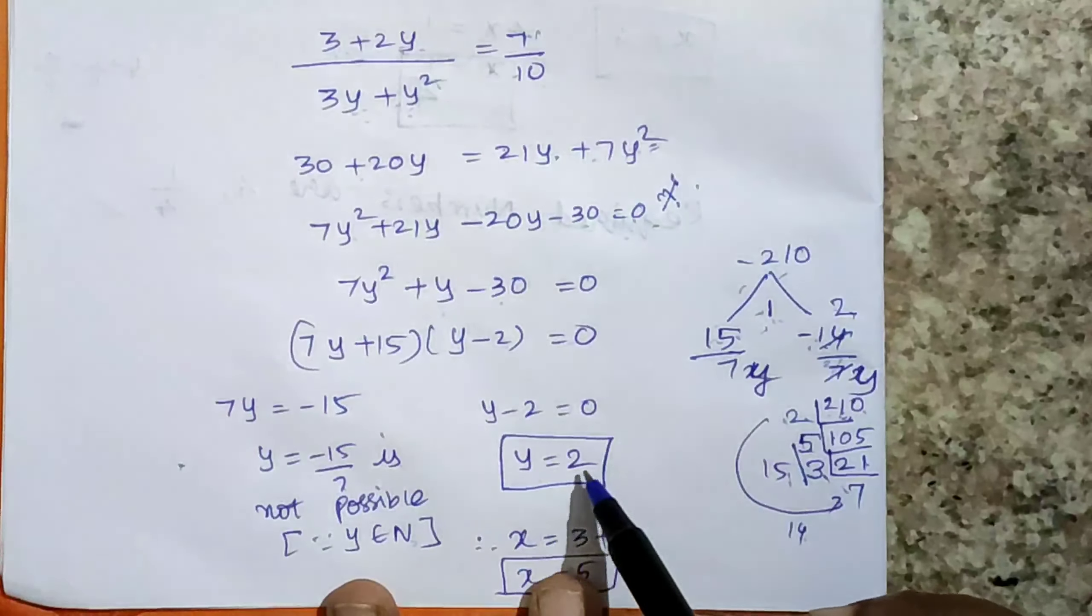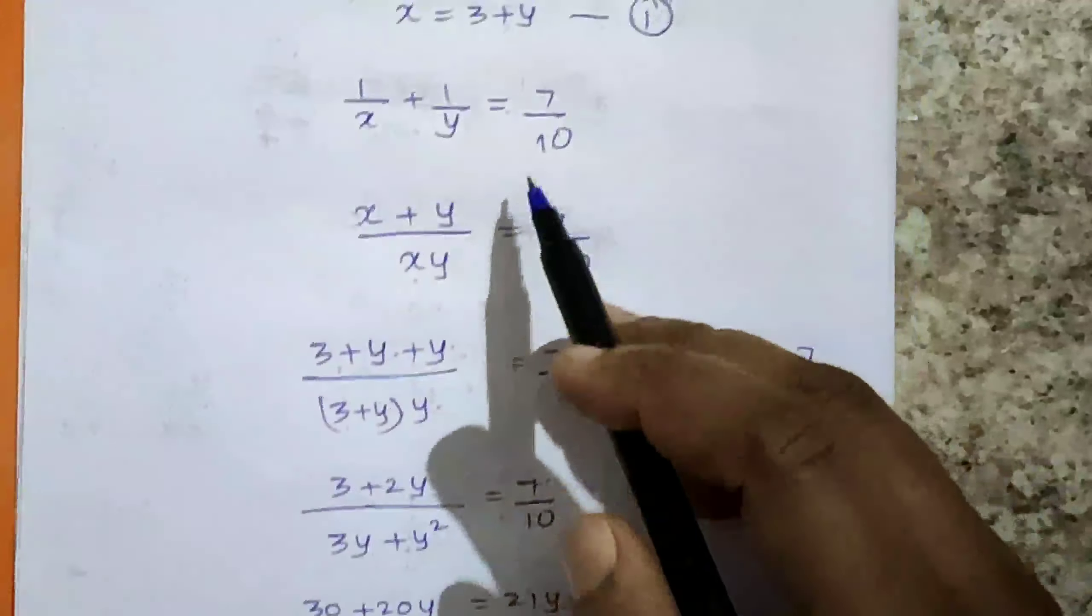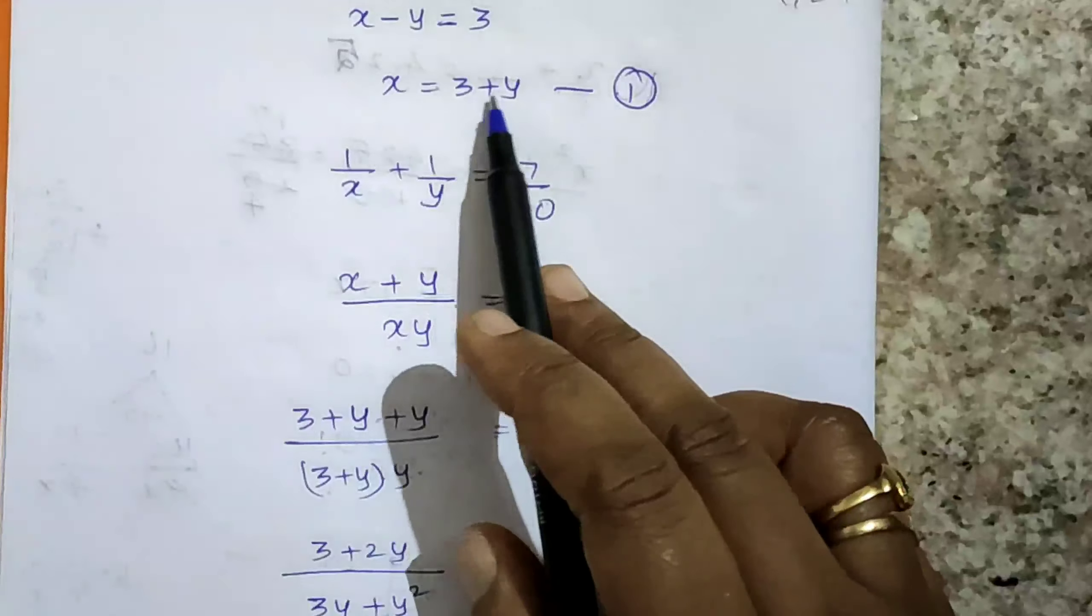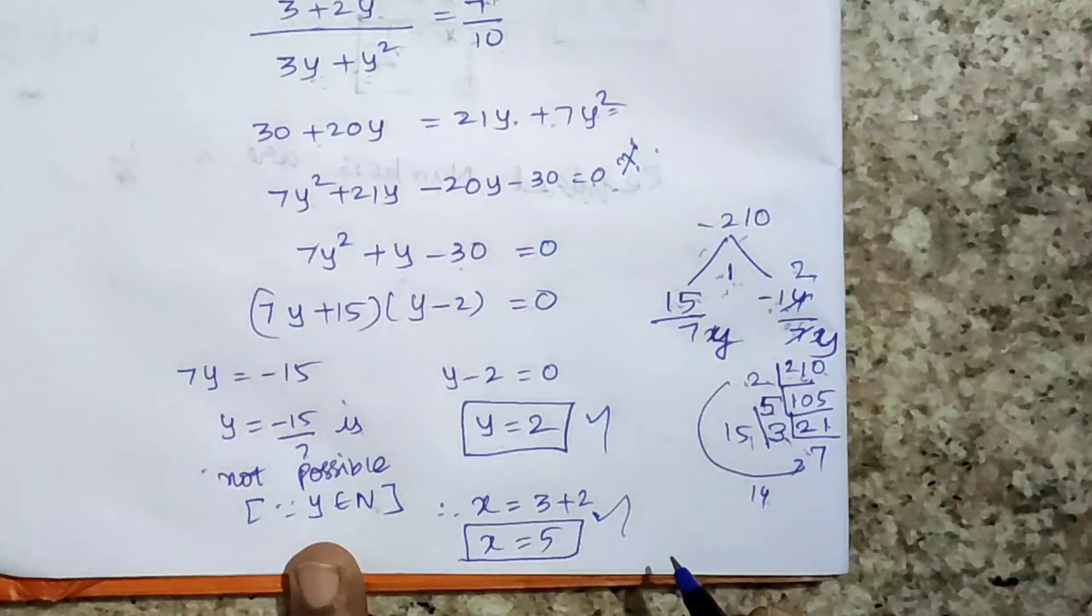y minus 2 equals 0, so y equals 2. This is our answer. Put y equals 2 in the first equation: 3 plus 2 is 5. So x equals 5 is our book back answer.